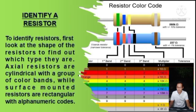To identify a resistor, first look at its shape to find out which type it is. Axial resistors are cylindrical with a group of color bands, while surface-mounted resistors are rectangular with alphanumeric codes.